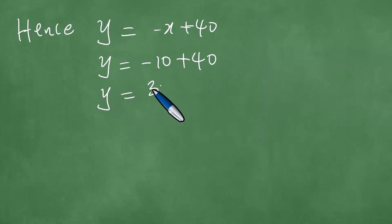Hence it follows that we know that Y is minus X plus 40. And this means Y equals minus 10 plus 40, so that Y equals 30.